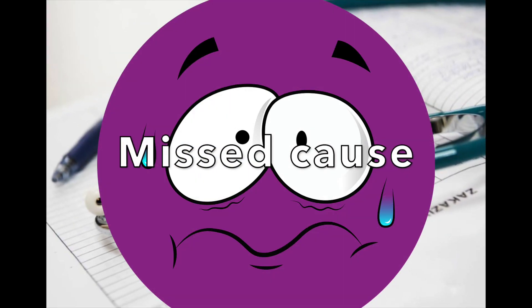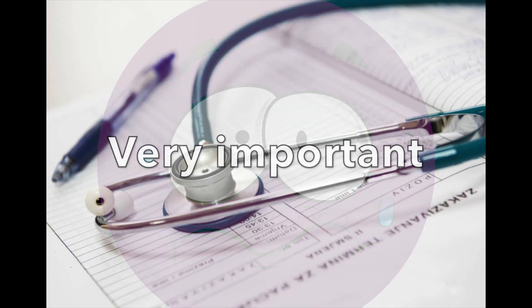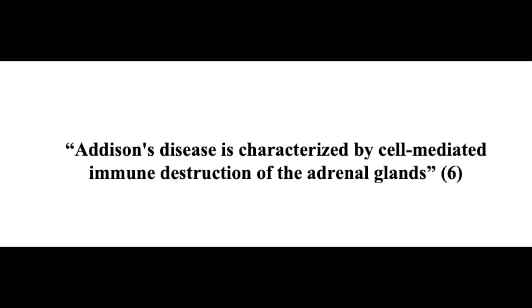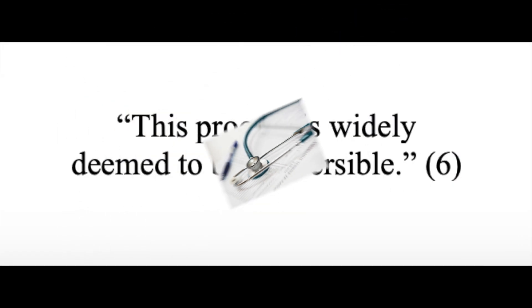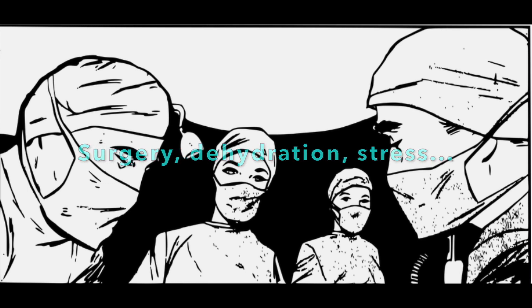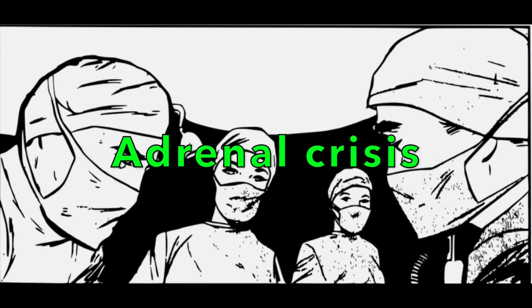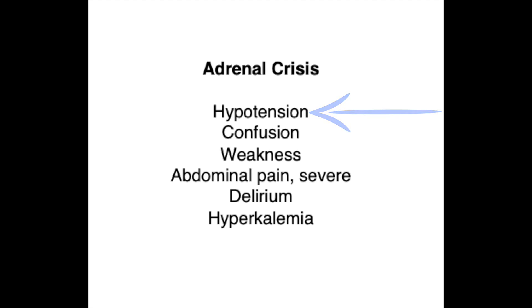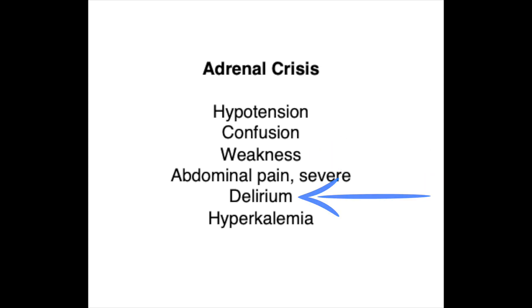The final cause of post-op hypotension is adrenal insufficiency. This is often one that gets missed when considering causes of hypotension, but it is extremely important to recognize. If an individual has Addison's disease, they don't produce enough cortisol and usually need lifelong replacement. Surgeries and other stressors can sometimes throw an individual into an adrenal crisis, and one of the signs of adrenal crisis is hypotension. Other signs include confusion, weakness, abdominal pain, delirium, and hyperkalemia.